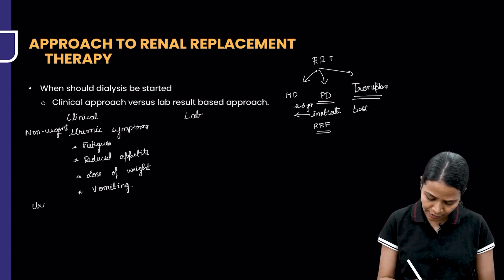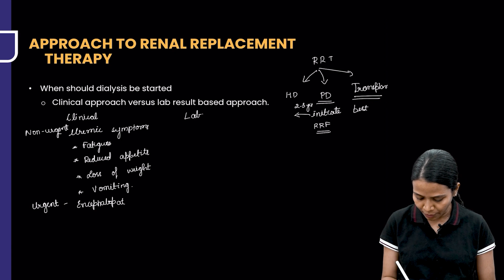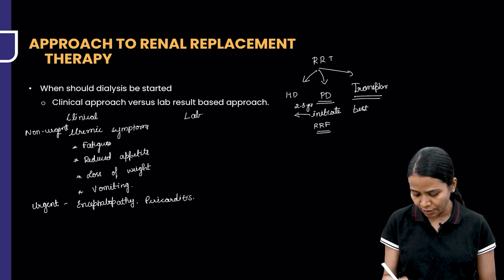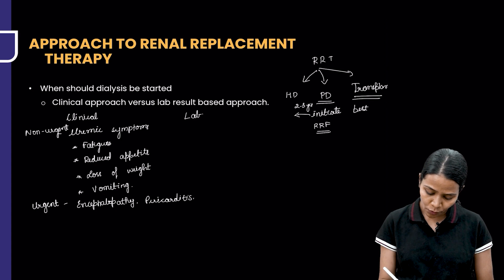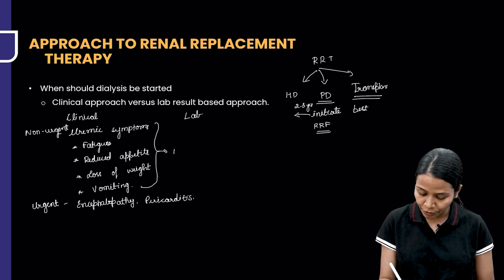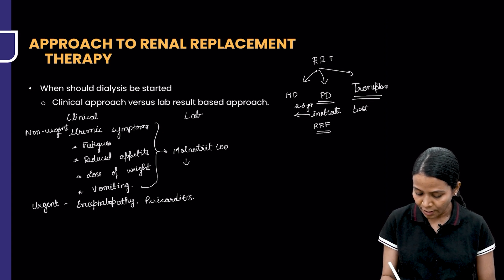There are urgent clinical indications to start dialysis, like uremic encephalopathy and uremic pericarditis. In this situation, you don't wait for any other lab parameters — you straight away go ahead and start dialysis. The risk of waiting until these symptoms set in is that the patient may develop malnutrition and hence increased mortality.